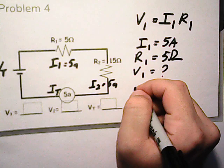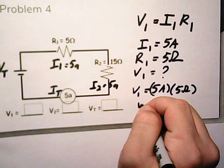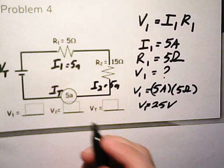So V1 equals five I, which is current, times R, which is resistance. So five times five gives us 25 volts because the unit is going to be volts.